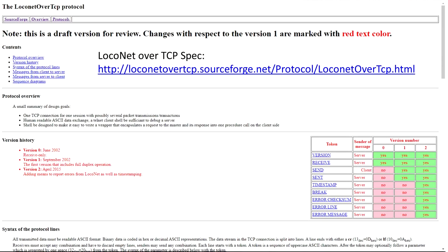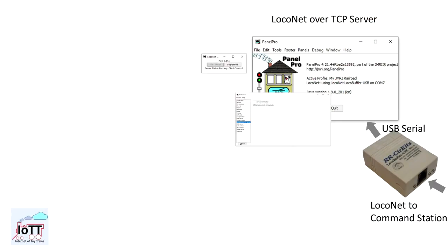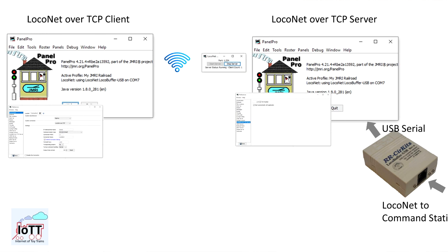The other convenient way to connect JMRI to LocoNet is using LocoNet over TCP, a communication protocol developed by Stefan Bormann almost 20 years ago. The link to the protocol specification is in the description of this video. Here is how it works. LocoNet is connected via LocoNet interface to a computer or microcontroller that provides a gateway to a network and acts as TCP server, which is usually called LB server.